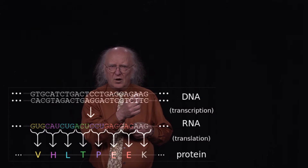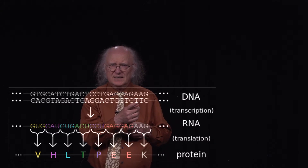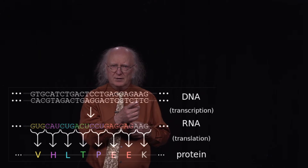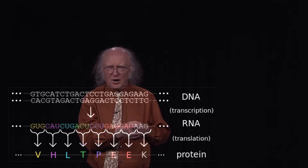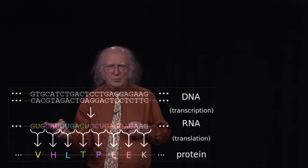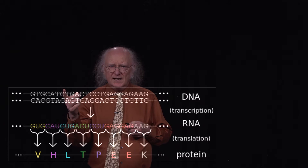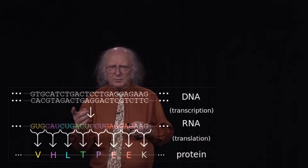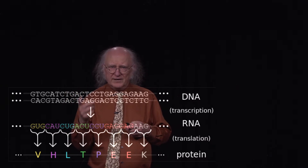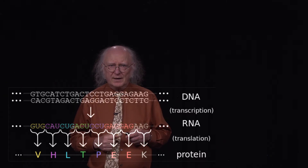The strand that's on the top is known as the coding strand, because it's complementary to the bottom strand, which is the template strand. It's the template strand that the RNA polymerase uses to make the RNA, and when it makes the RNA, you can see that the sequence is identical to the coding strand of DNA, except for the fact that U replaces T. That's why we call the top strand the coding strand and the bottom strand the template strand.